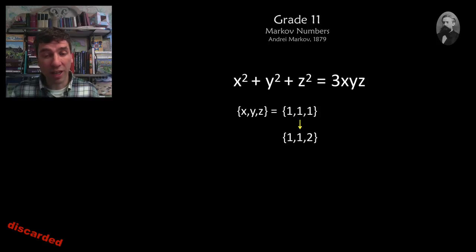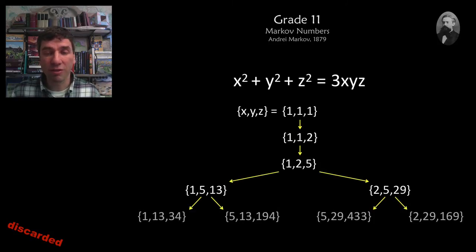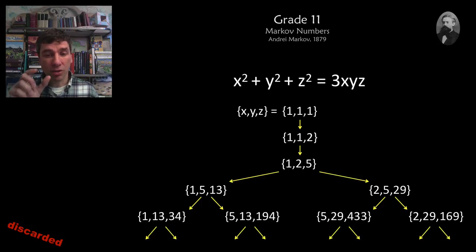But then you can fix 1 and 2, and you can search for another solution, and we find out that 1, 2, and 5. We're always going to organize these triples from lowest to highest whenever we find them.